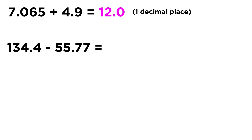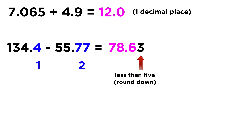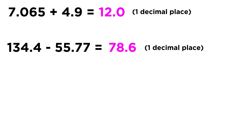Now looking at the subtraction: 134.4 minus 55.77. We put that in the calculator and get 78.63. Again, we apply the same rule — the first value has one decimal place, the second has two decimal places, so the smaller number is one decimal place. Our answer must have one decimal place. The next digit is 3, so we round down, and our answer is 78.6.